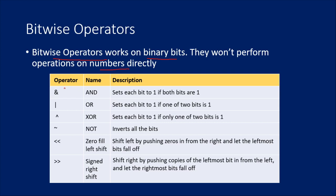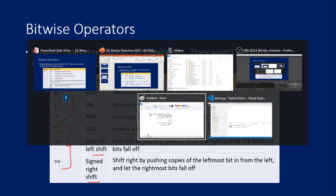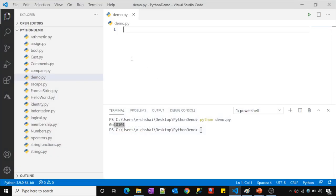We discussed three operators in our past video, and this video will cover the remaining three — the NOT operator, left shift, and right shift operators. Let's understand them one by one. What does the NOT operator do? It actually flips the bits in any number. Let me practically show you what I mean. Let me go to Visual Studio Code.